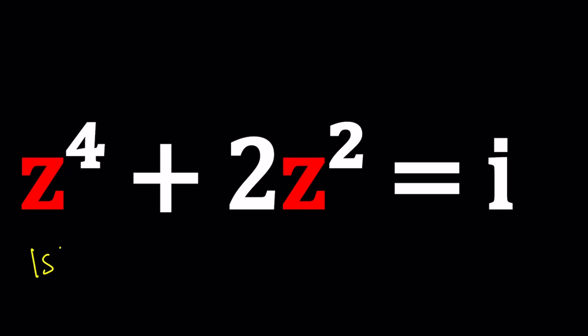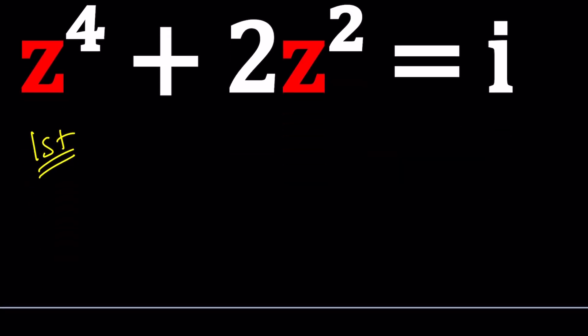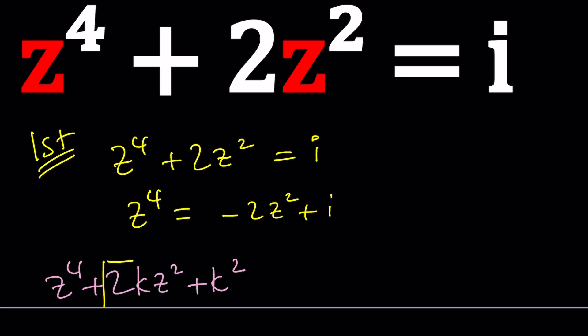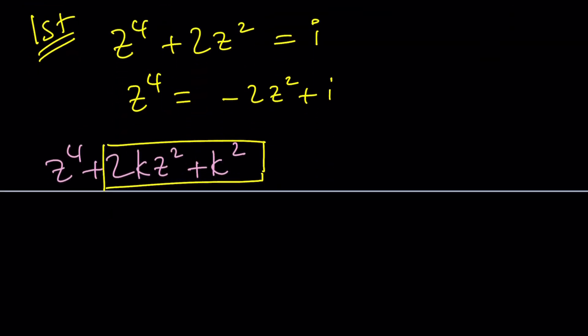So first method, which is something you should probably never ever do, is use the quartic formula. How does the quartic formula work? You can add negative 2z squared, write it as follows, and then to both sides we're going to add 2Kz squared plus K squared. This piece turns the left hand side to a perfect square. The idea is to get a quadratic in z.